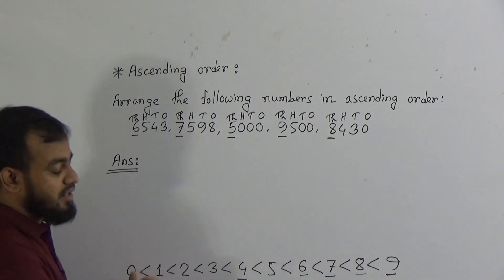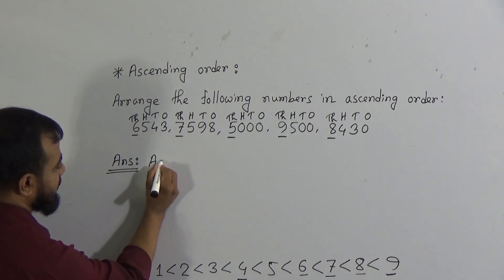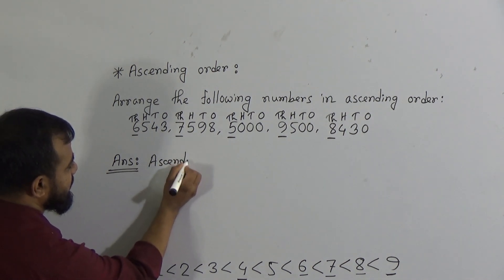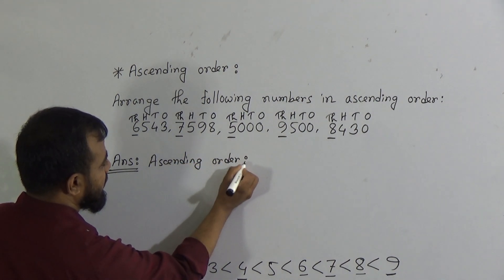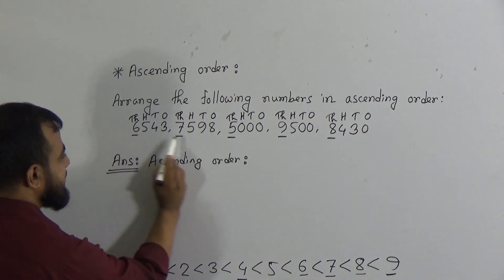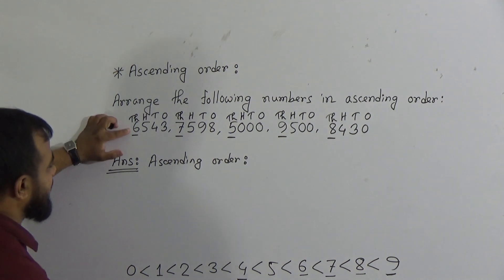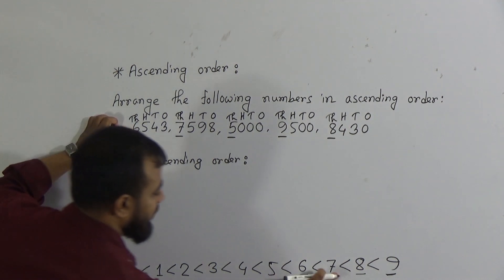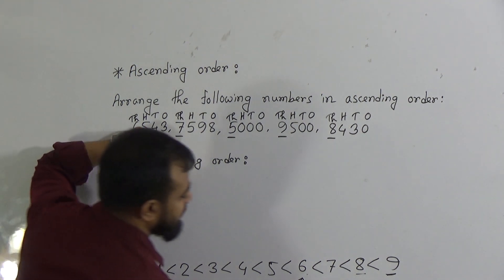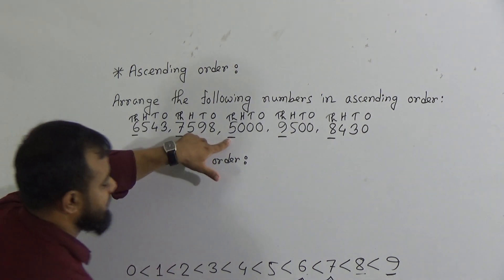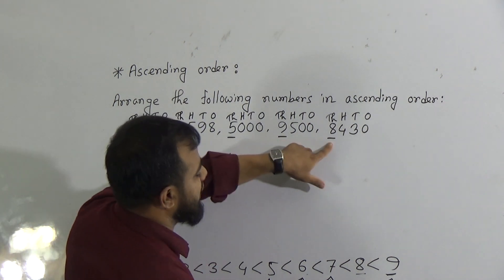Now we need to arrange from smaller to greater — write down in ascending order. Which one is the smallest among 6, 7, 5, 9, and 8? We can identify here: we have 6, then 7, then 5 in the thousands place, then 9 in the thousands place, and 8 in the thousands place. It is very clear that 5 is the smallest digit among these 5 numbers.